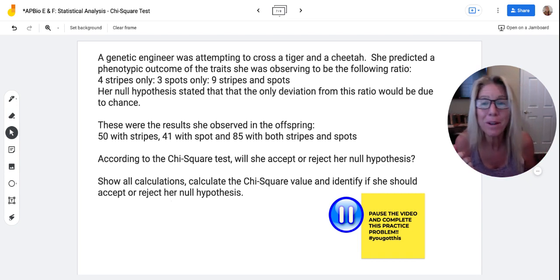So now let me go over it with you. This genetic engineer was trying to cross a tiger and a cheetah. She predicted a phenotypic outcome of the trait she was observing to be the following. In her ratio, she thought it would be four to three to nine.